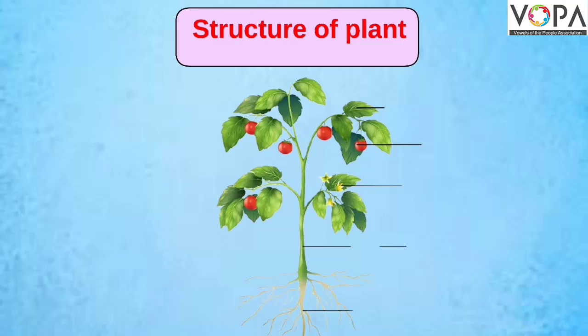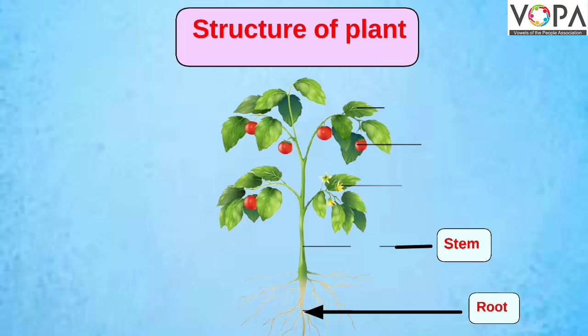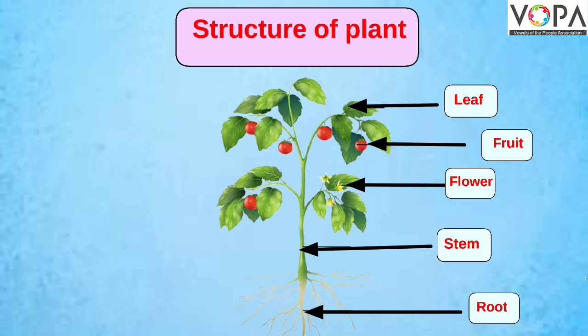The plant structure is divided into five parts: roots, stem, leaves, fruit, and flower. The first and the main part of the plant is the root.